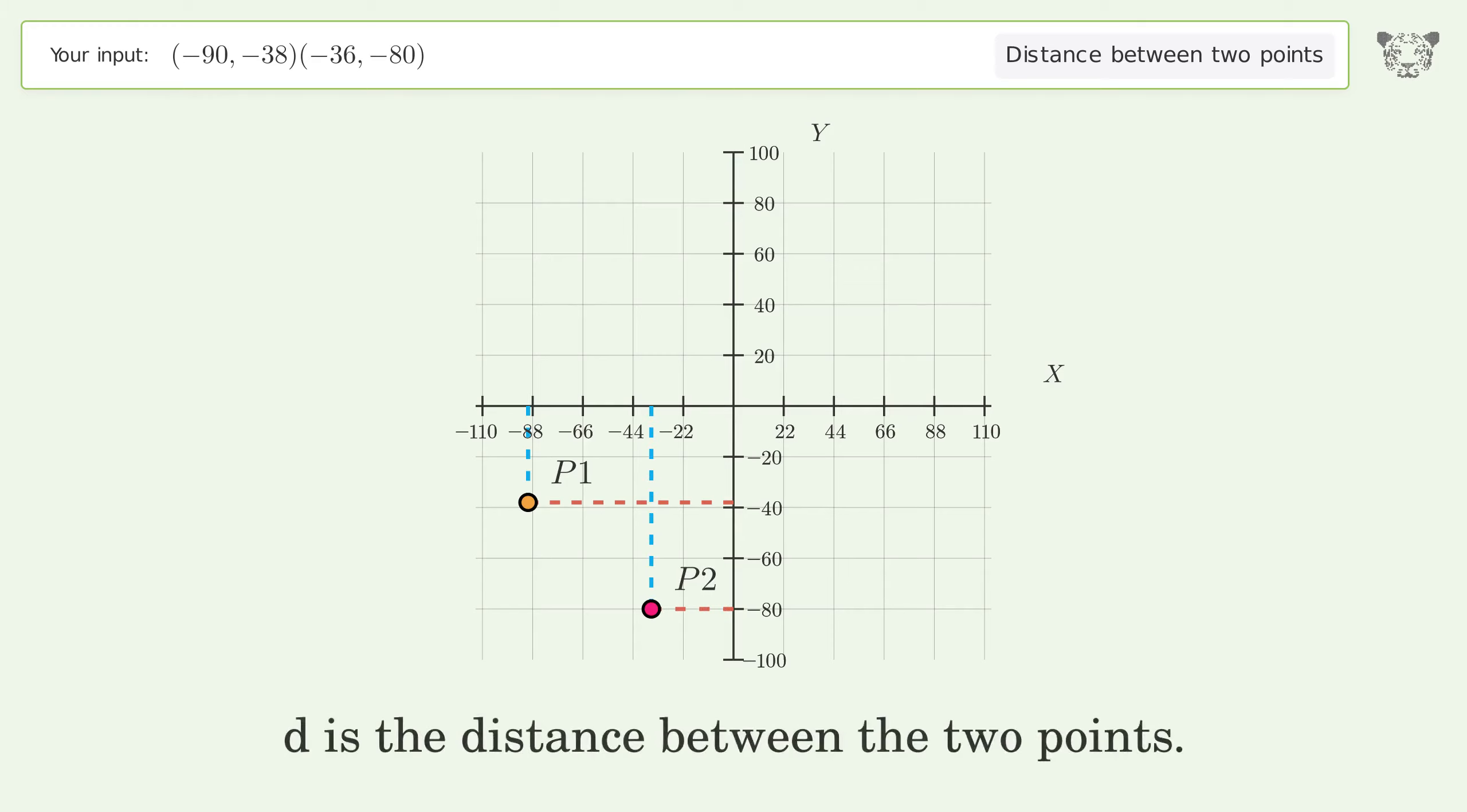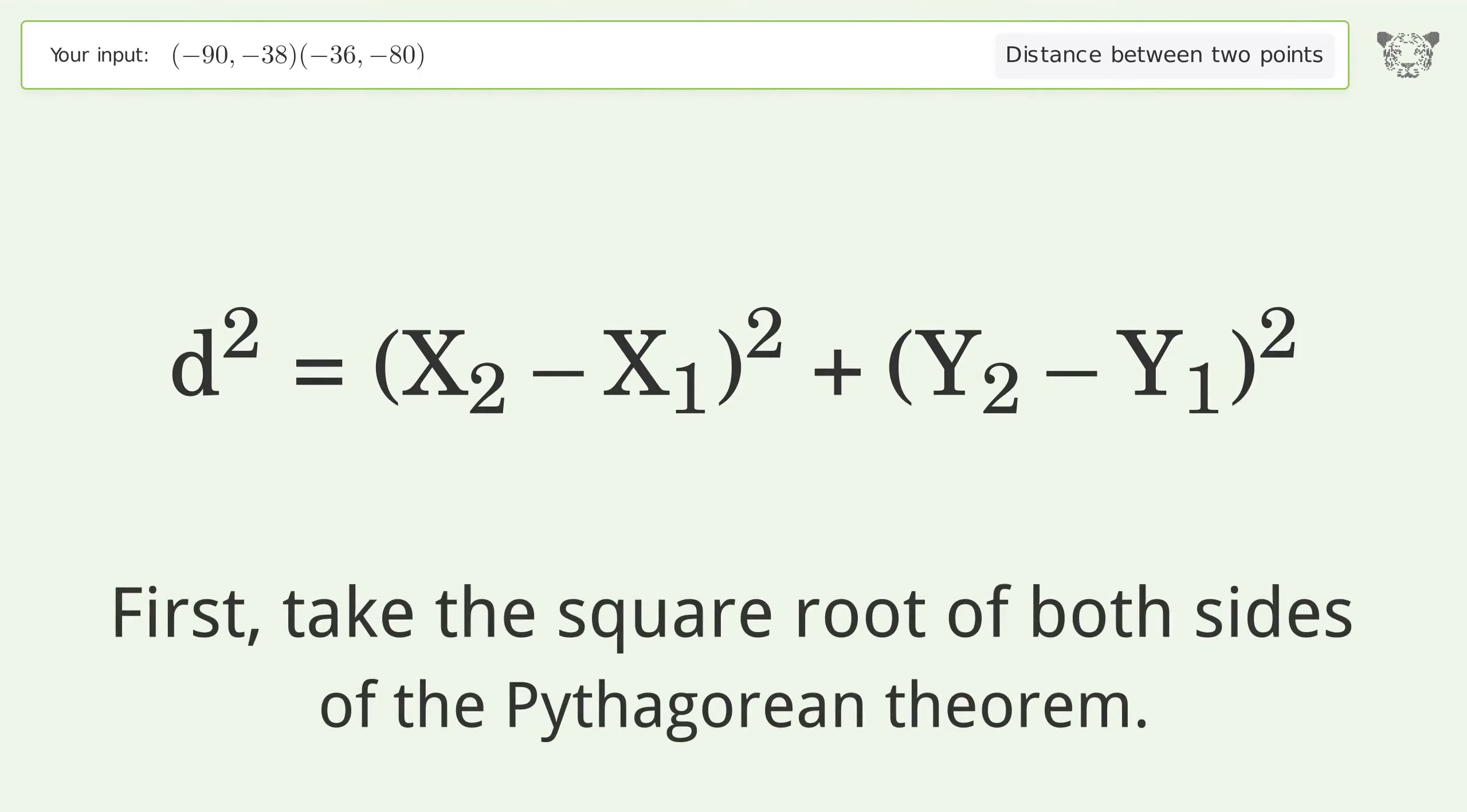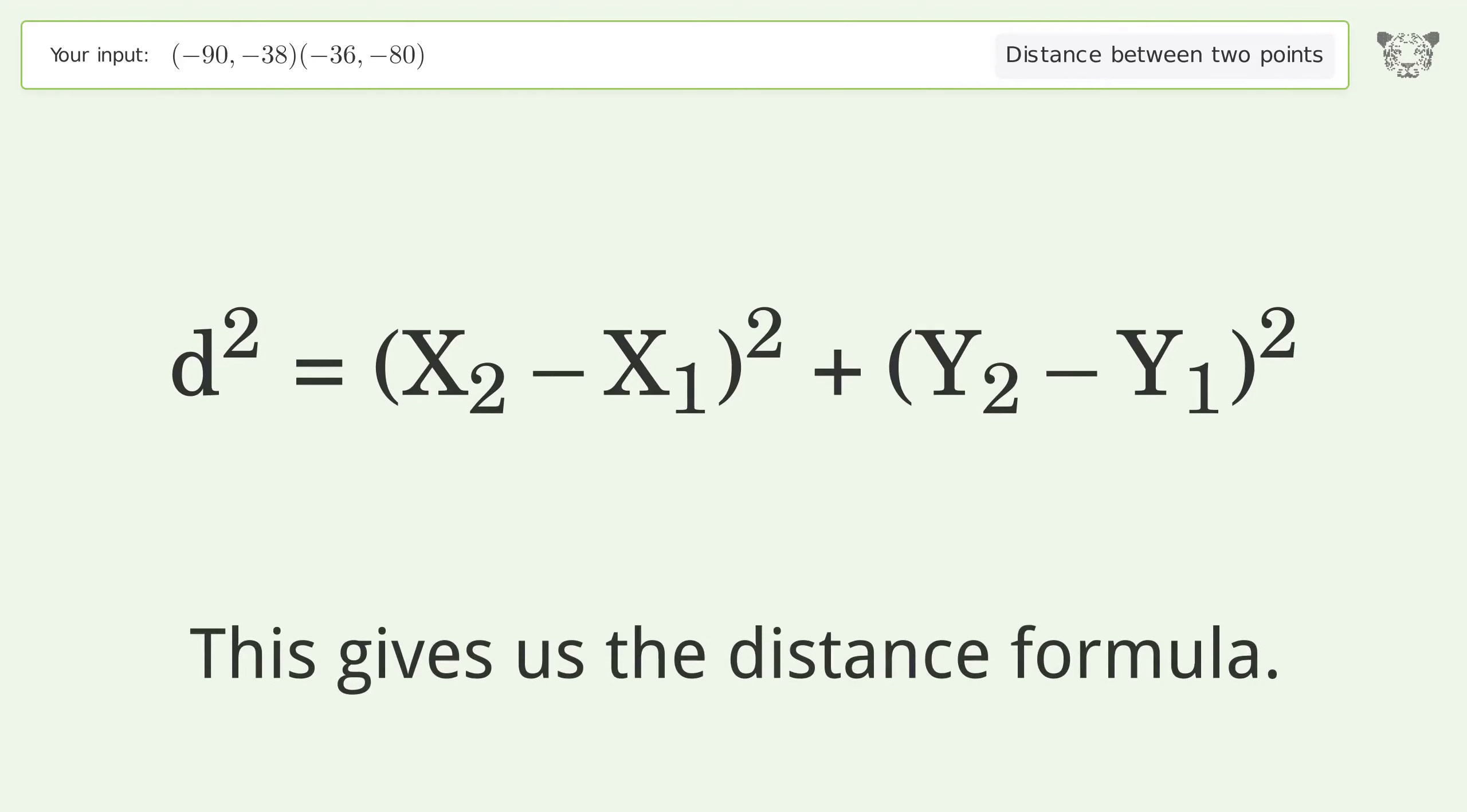d is the distance between the two points. First, take the square root of both sides of the Pythagorean theorem. This gives us the distance formula.